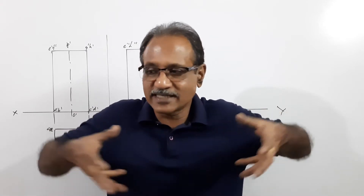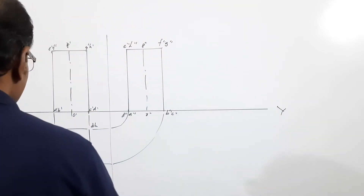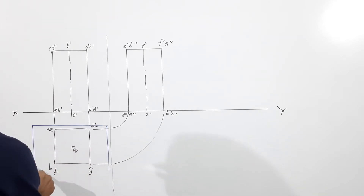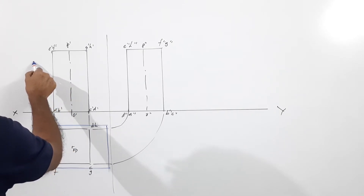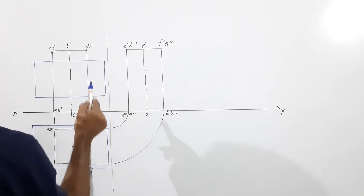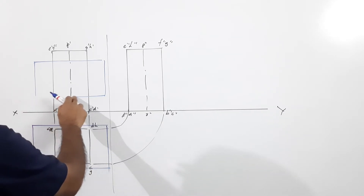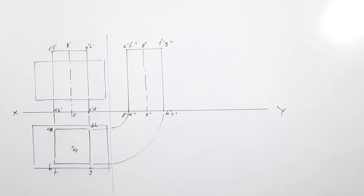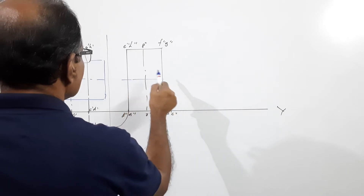The horizontal cylinder is oriented like this. The plan of the horizontal cylinder is a rectangle. The elevation is also a rectangle.